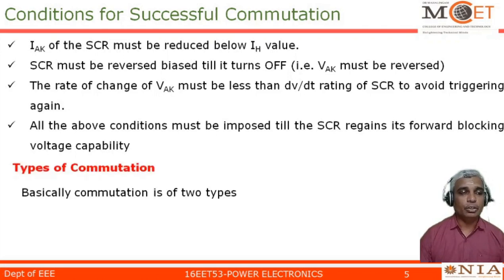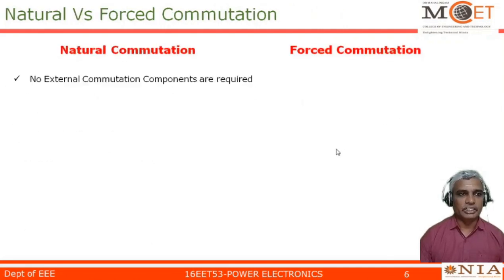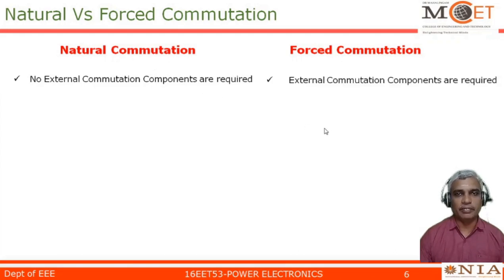There are two different types of commutation basically. One is natural commutation and the other is forced commutation. In natural commutation, no external circuitry is needed — additional components are not required. Whereas in forced commutation, external commutating components are required.